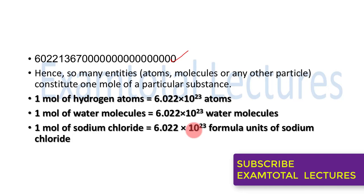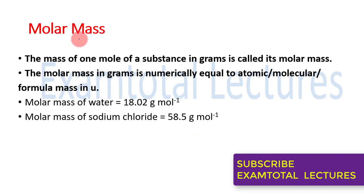Now we have defined the mole. It is easier to know the mass if you want to measure one mole of a substance. The mass of one mole of a substance in grams is called molar mass. The molar mass, expressed in grams, is numerically equal to the atomic mass, molecular mass, or formula mass in unified mass units (AMU). This is very important — molar mass is numerically equal to atomic, molecular, or formula mass in U.